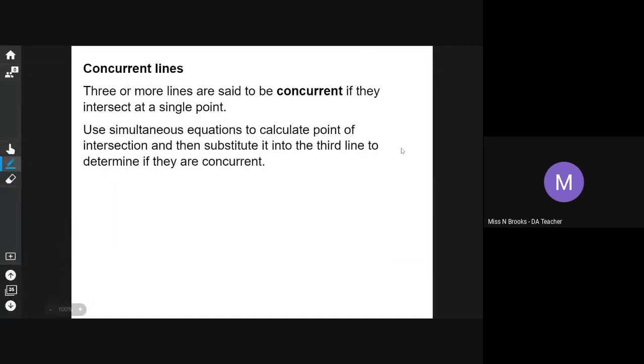Right, so final video for straight line is concurrent lines. Three or more lines are said to be concurrent if they intersect at a single point. We can use simultaneous equations to calculate that point of intersection and then substitute it into the third line to determine if they are concurrent or not.